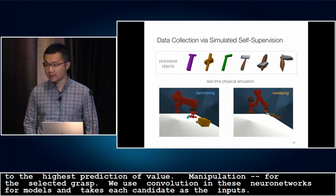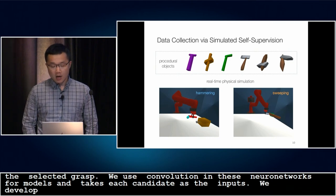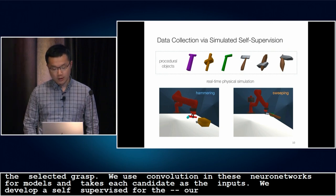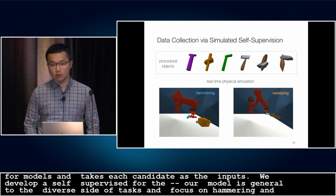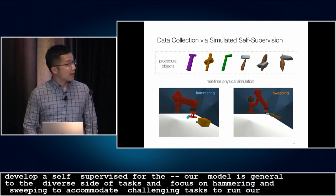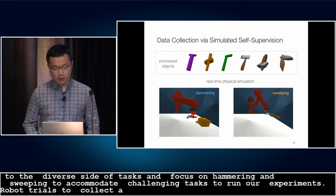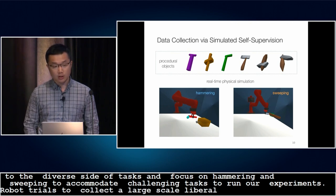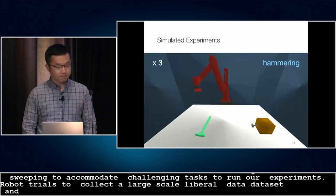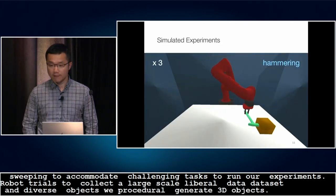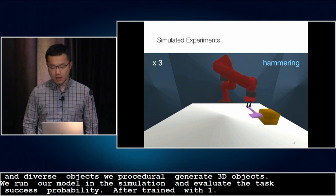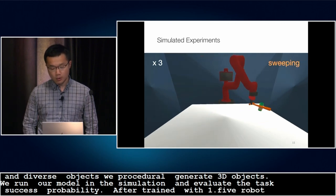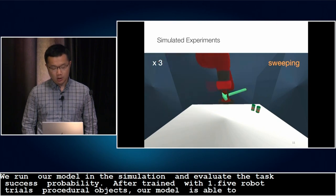We develop a self-supervised learning framework to train the two modules jointly, so our model is general to a diverse set of tasks. We focus on hammering and sweeping as two common but challenging tasks for our experiments. We roll out simulated robot trials to collect a large-scale labeled dataset, and to generalize to diverse objects, we procedurally generate 3D objects. After being trained with 1.5 million robot trials with procedural objects, our model is able to learn to use unseen realistic shapes to perform the two tasks.